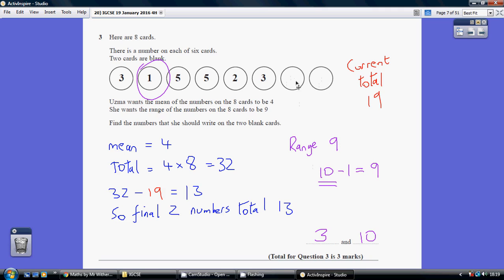So one of these two numbers is 10. And given they add up to 13, the other number must be 3.